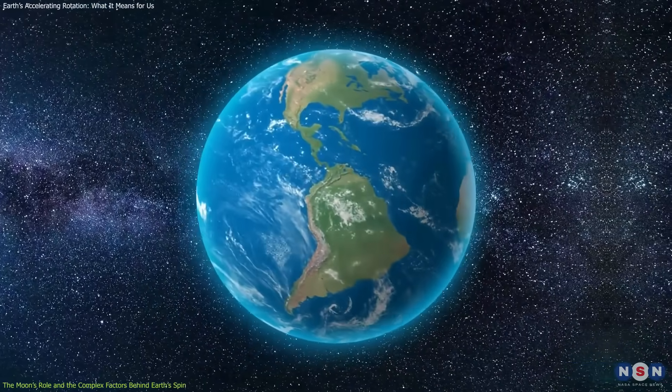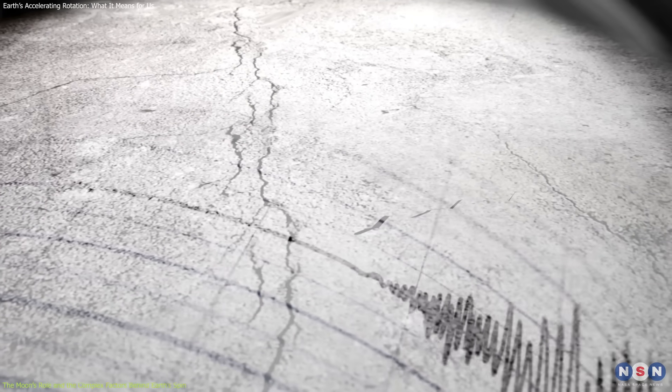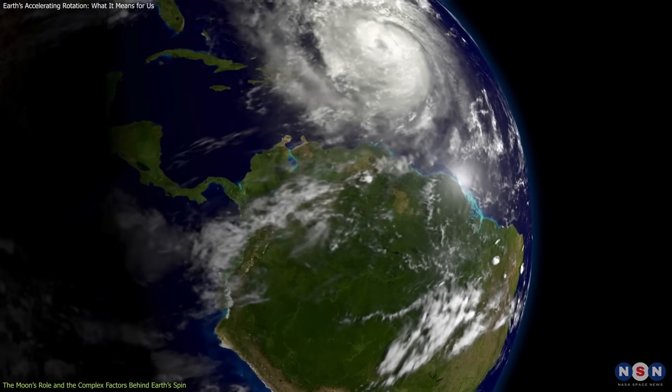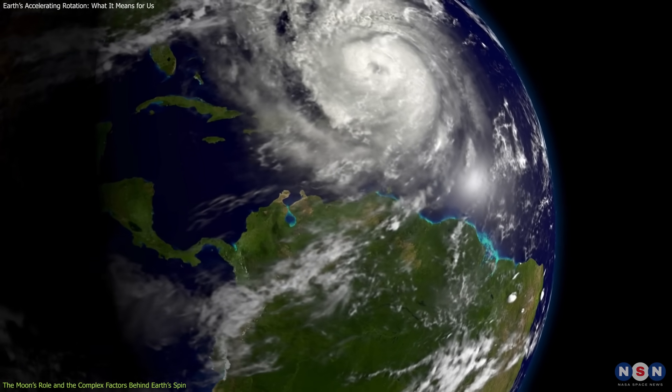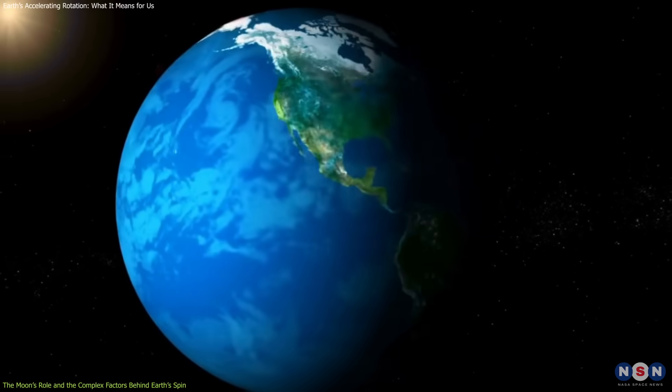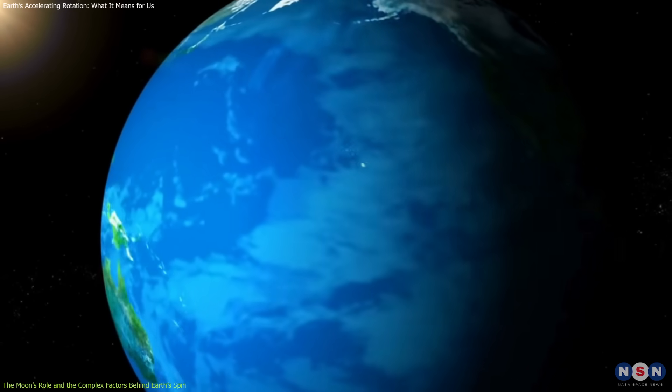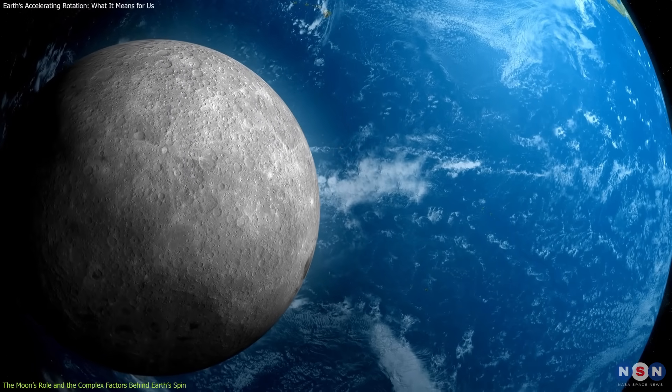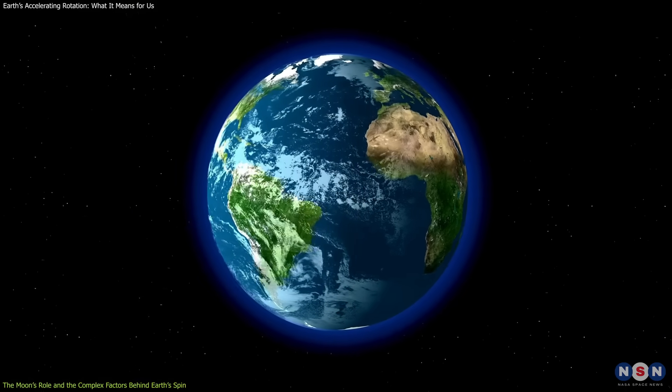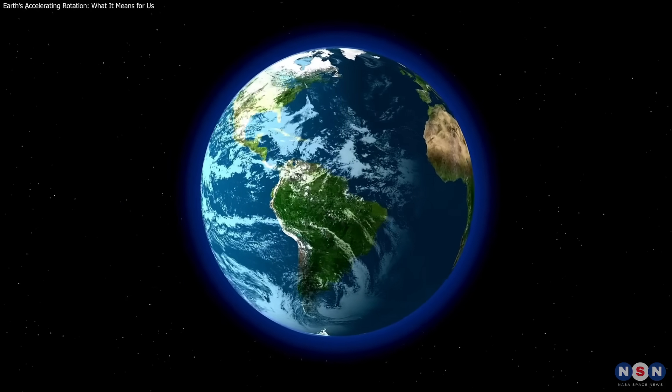Geological events like earthquakes and volcanic activity can also affect Earth's rotation by shifting the planet's mass. For instance, the 2011 Japan earthquake caused a measurable change in Earth's spin. While the moon's gravity remains the primary factor, Earth's rotation is influenced by a mix of lunar, atmospheric, and geological forces.